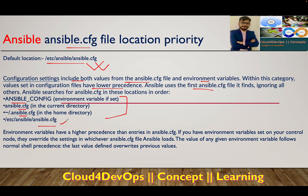And finally, if all three locations are not available, Ansible will always fall back to the default installation path. That is how location priority works for the configuration file. Environment variables have a higher precedence than entries in ansible.cfg — if you have an environment variable set on your controller node, it overrides the setting in whichever ansible.cfg file is loaded. Within shell logic, the last value defined overwrites the previous value.